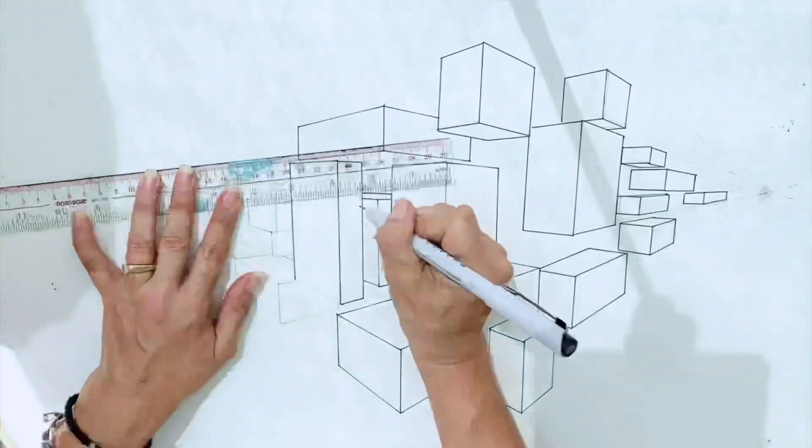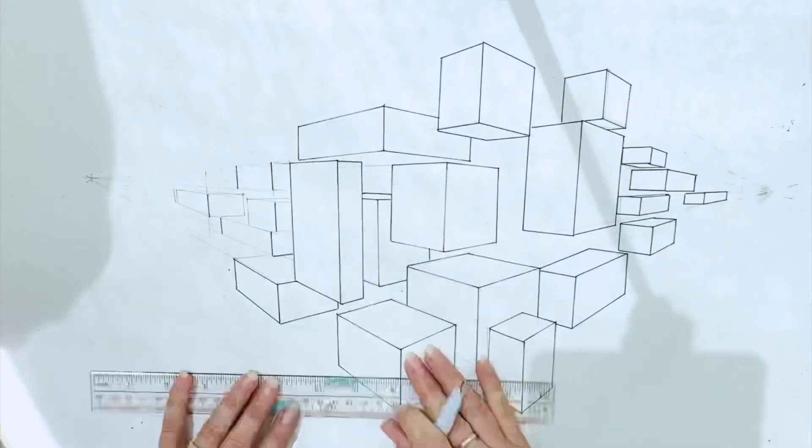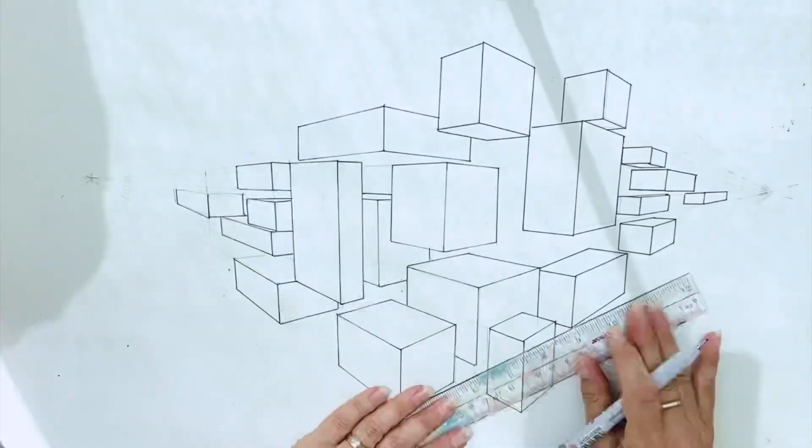Once your drawing is complete, go over your lines with a fine liner and erase your pencil marker lines.